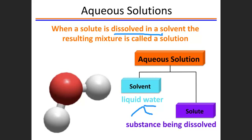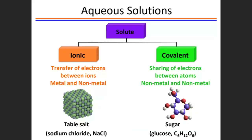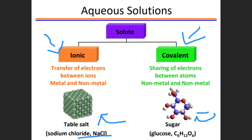In aqueous solutions, the solvent is mostly liquid water, and the solute is a substance that needs to be dissolved. Solutes come in two kinds: ionic and covalent. Ionic compounds are made by transferring electrons — metal and non-metal involved — like table salt, sodium chloride. Covalent compounds, like sugar or glucose, involve sharing of electrons between non-metal atoms.